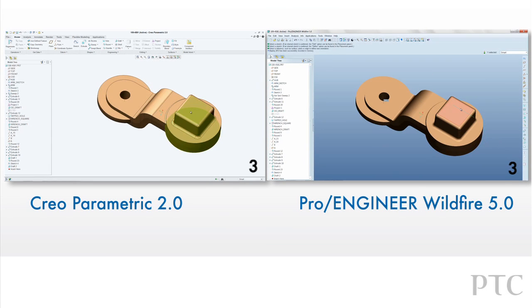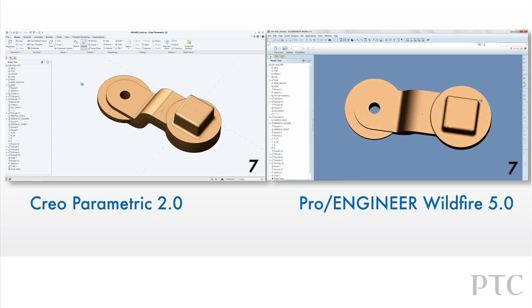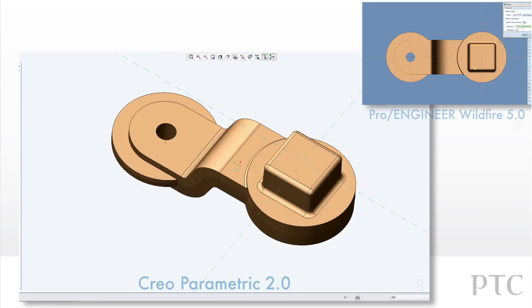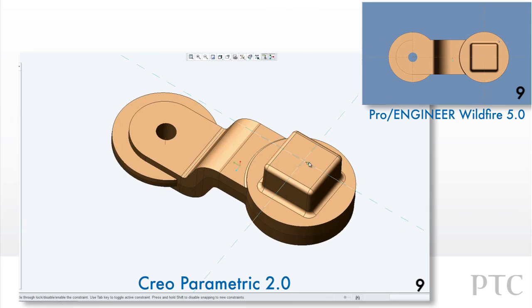Creo Parametric introduces many enhancements in sketching to make the modeling process faster than Pro Engineer Wildfire. Specifically, it only takes two picks to get into the sketching environment without any additional windows.